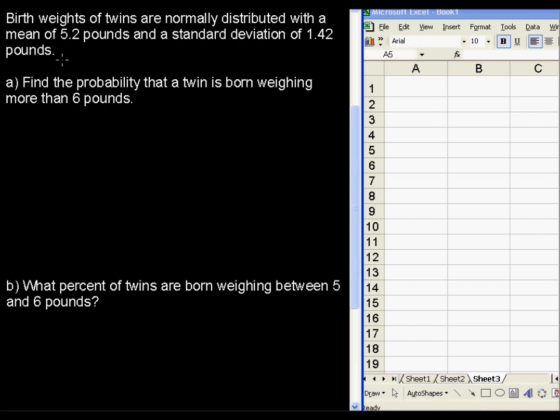Birth weights of twins are normally distributed with a mean of 5.2 pounds and a standard deviation of 1.42 pounds. Find the probability that a twin is born weighing more than 6 pounds.